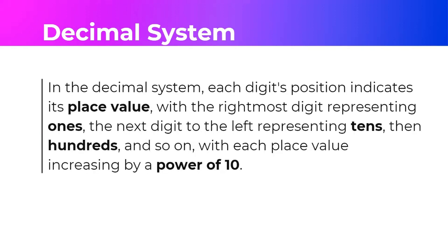In this decimal system, each digit's position indicates its place value — like a typical topic we cover in mathematics class. The rightmost digit represents the ones, then the next digit to the left is tens, then hundreds, then thousands, and so on.